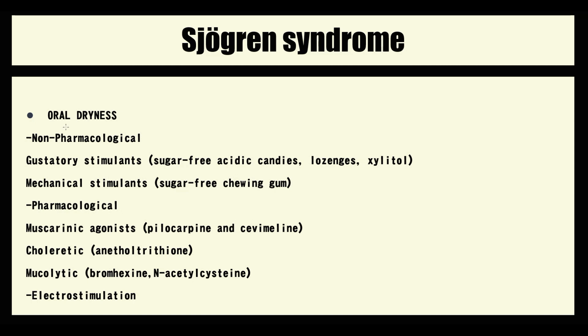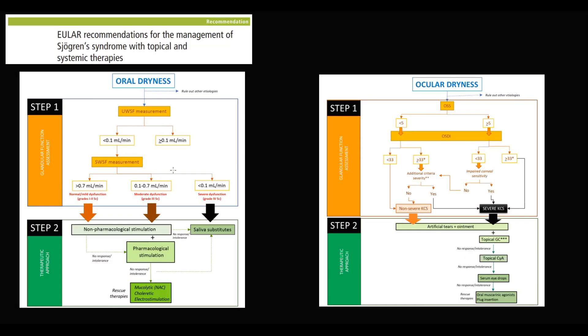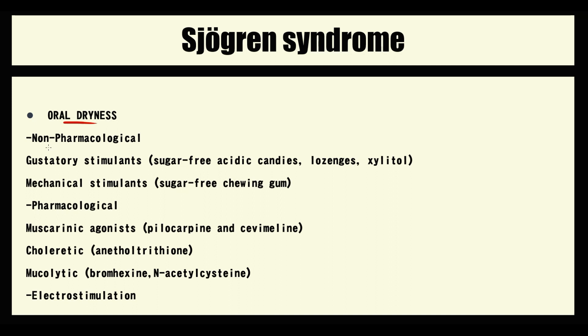For treatment of Sjögren's syndrome, the two major symptoms are oral dryness and ocular dryness. For oral dryness, according to current guidelines, we first measure the severity of xerostomia, then use non-pharmacological treatment as the first option, followed by pharmacological stimulation, and as a rescue option we use mucolytics, choleretics, and electrostimulation. As the first line, non-pharmacological methods include gustatory stimulants such as sugar-free candies or xylitol, and mechanical stimulants such as chewing gum.